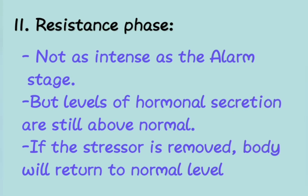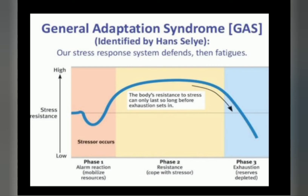The second stage of General Adaptation Syndrome is the resistance phase. It is not as intense as the alarm stage, but hormone secretion levels are still above normal — your body continues to secrete high levels of adrenaline and cortisol. If the stressor is removed and you find an escape route, your body will return to normal. If not, it will go into the third stage — exhaustion. Here is a graphical representation of General Adaptation Syndrome.